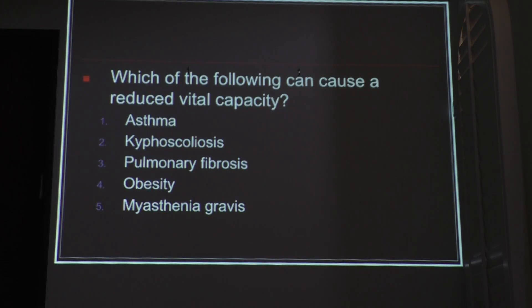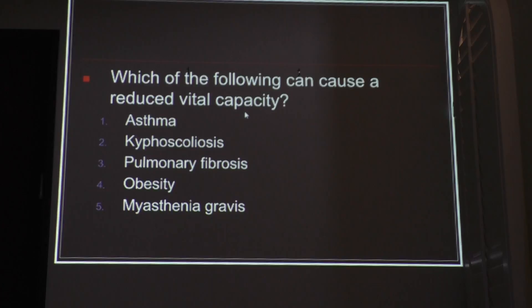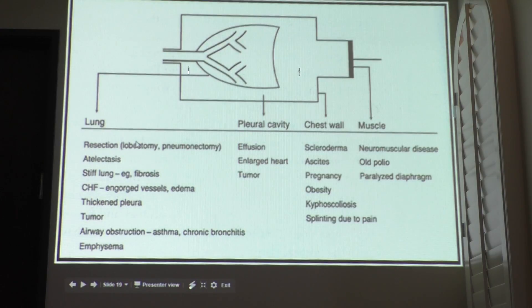Which conditions can cause a reduced vital capacity? Vital capacity is the sum of inspiratory and expiratory volume. All of them — pulmonary fibrosis, obesity, and asthma — can actually cause decreased vital capacity. You have to think about causes from the lungs, from the pleural cavity, from the chest wall, and from the muscles.